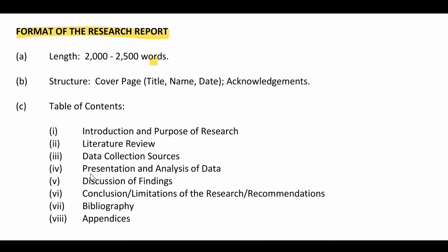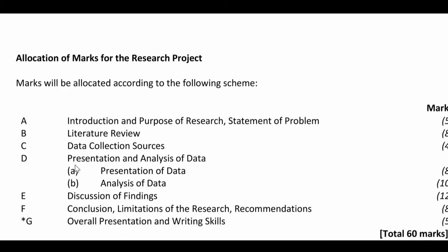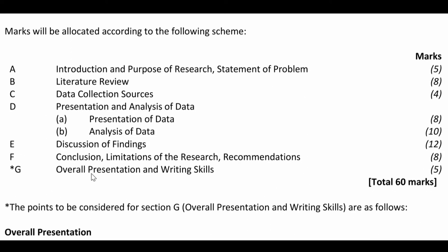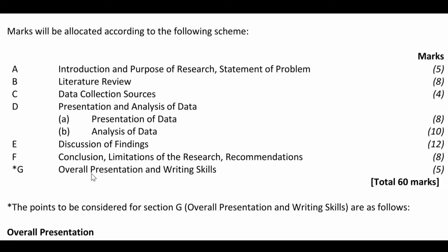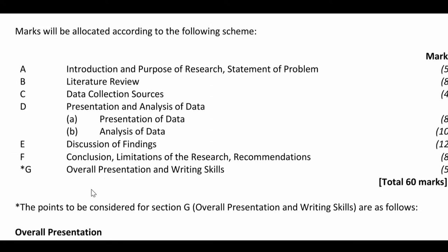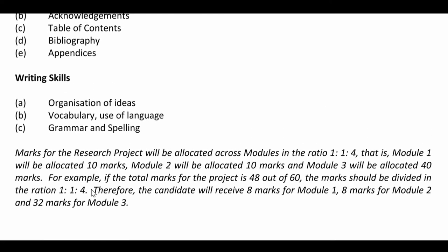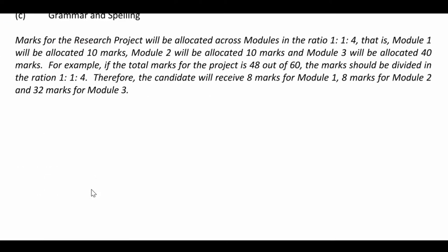Your research project has a word limit of 2000 to 2500 words. You must have a cover page, acknowledgement, and a table of contents — and your contents, because you can have a table of contents and not have any content. I also want you to pay attention to the mark scheme, as it will help you know where to put most of your effort and focus.